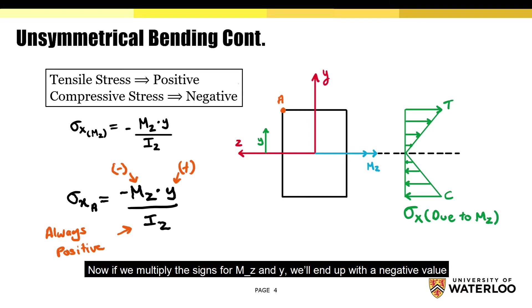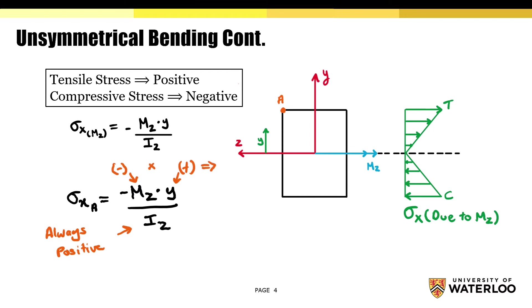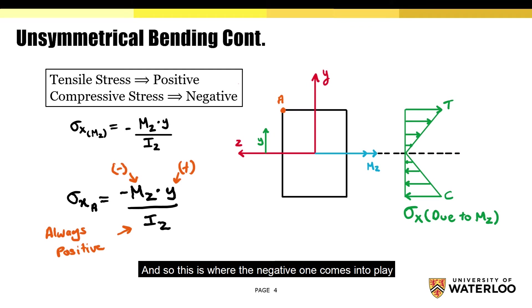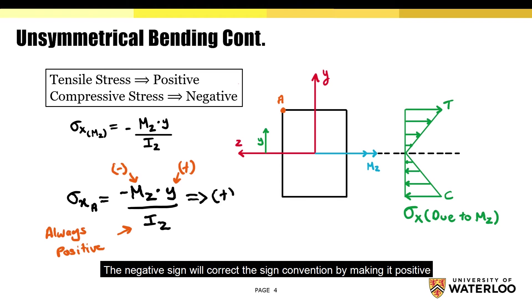Now, if you multiply the signs for Mz and y, we'll end up with a negative value. However, the value should be positive because point A is under tension. And so this is where the negative 1 comes into play. The negative sign will correct the sign convention by making the result positive.